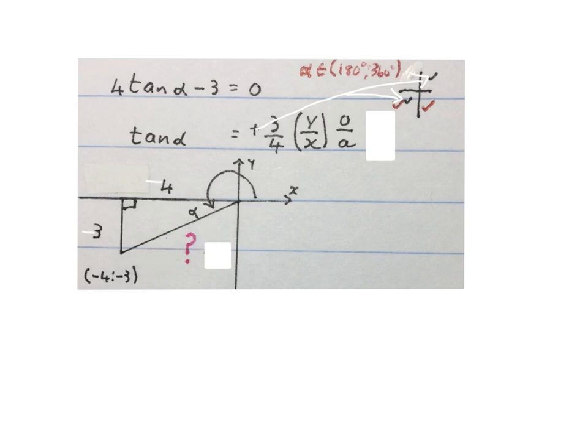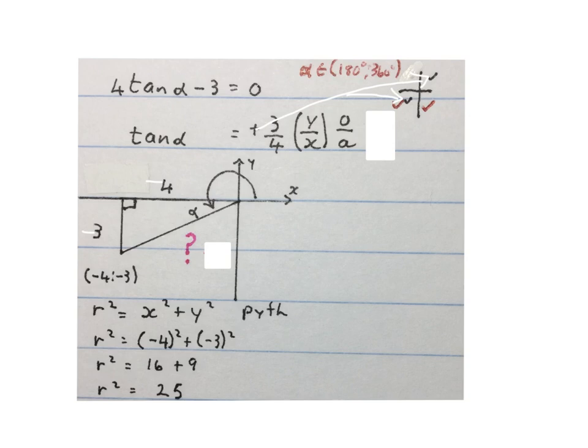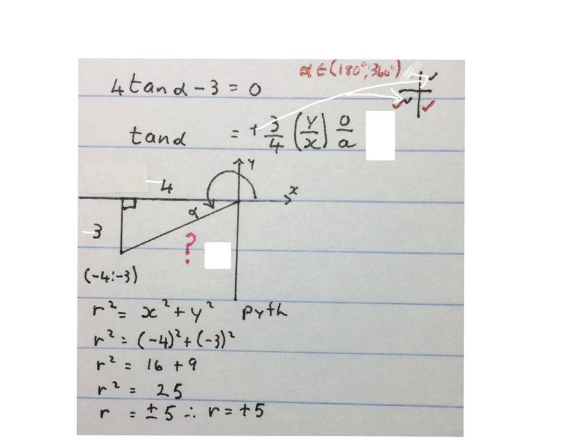r squared equals x squared plus y squared from Pythagoras. Fill in the values in brackets. Simplify. So r squared is 25. Square root, your answer is r equals plus or minus 5. And your radius is always positive. So it's r equals plus 5. Let me fill that in on the sketch. And just now we can use this diagram to solve this problem.